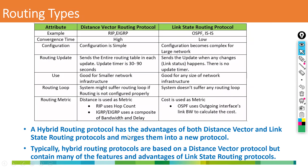I will explain the metric using OSPF protocol since it is industry standard. Hybrid protocol is a combination of both distance vector and link state — it takes advantages of both and merges them into a new protocol. Typically, hybrid routing protocols are based on a distance vector protocol but contain many features and advantages of link state routing protocol as well.